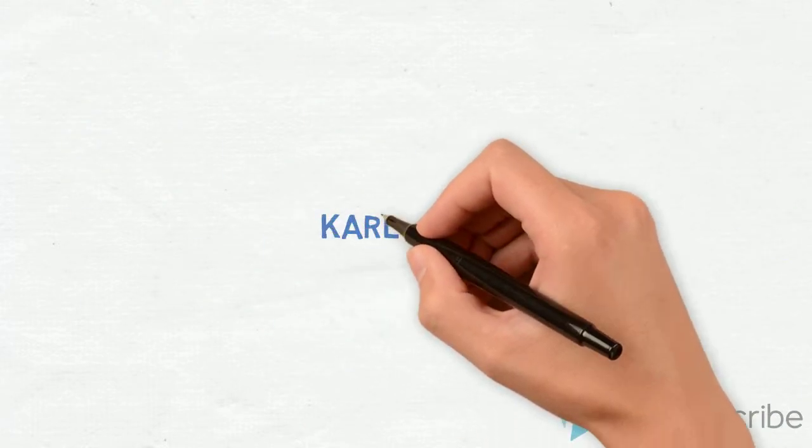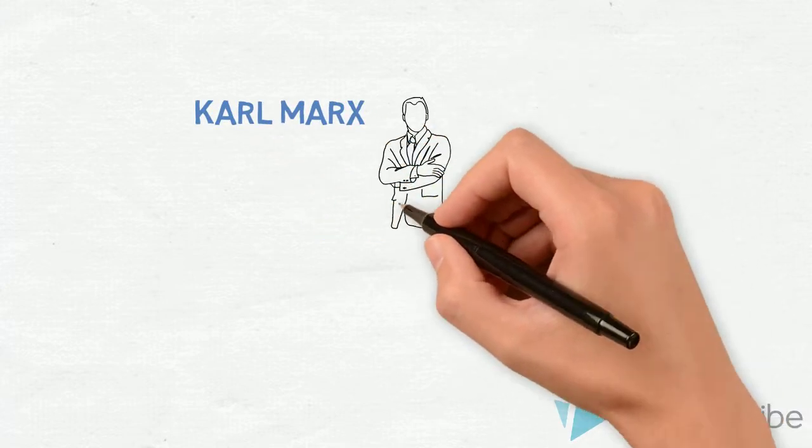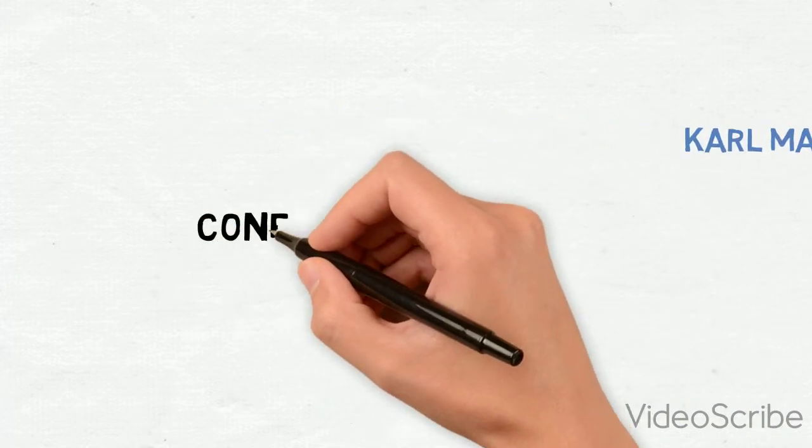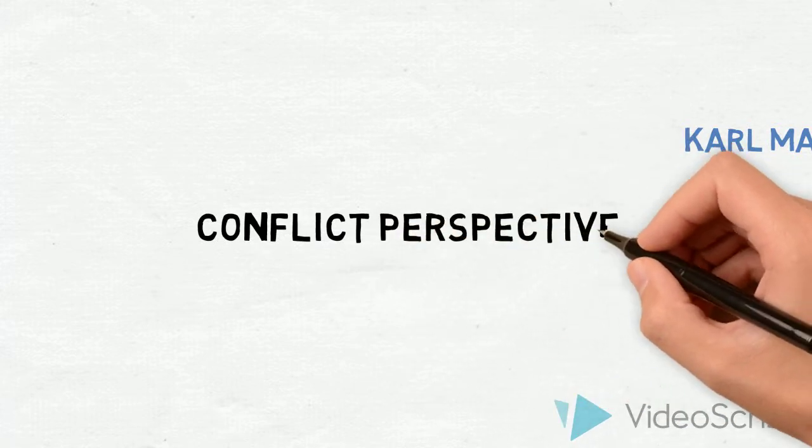Karl Marx believed that the structure of society was organized by a system similar to a hierarchy based on the economy. Marx had a conflict perspective, believing that forces in society promote competition and change.